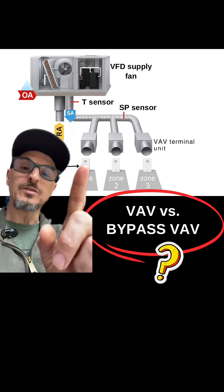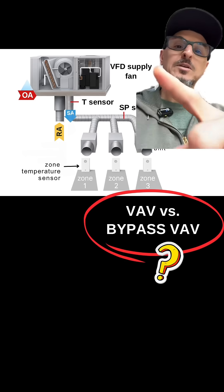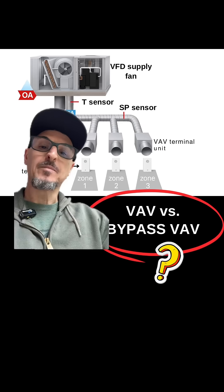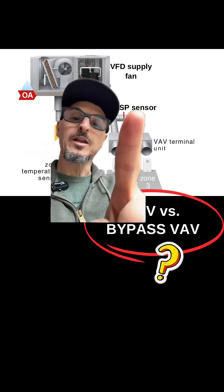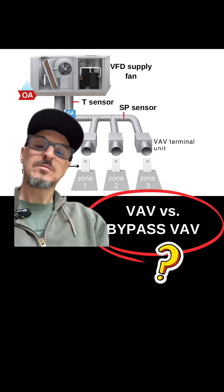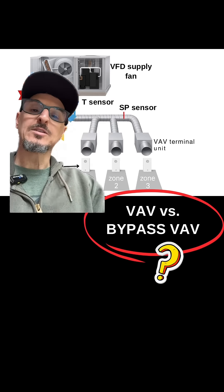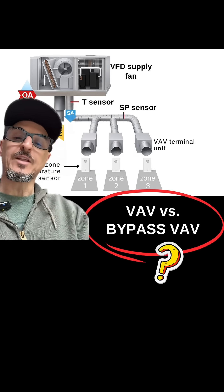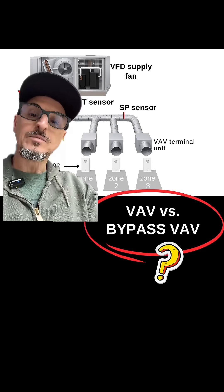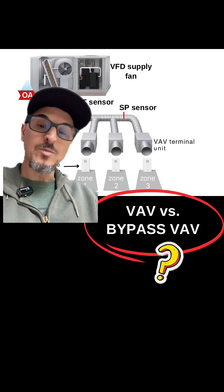In a true VAV system, it's very similar, except your supply fan does modulate based on a static pressure sensor in your duct. So as the dampers start to close, the pressure in the duct increases, your supply fan slows down — and that's how a typical standard VAV system works.